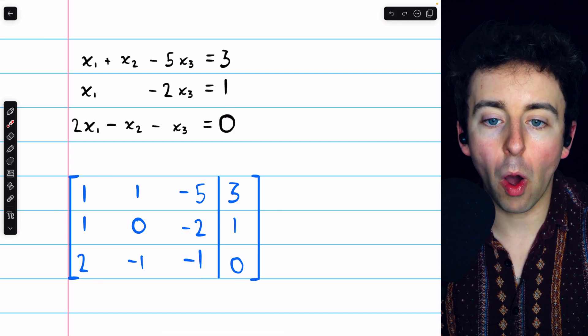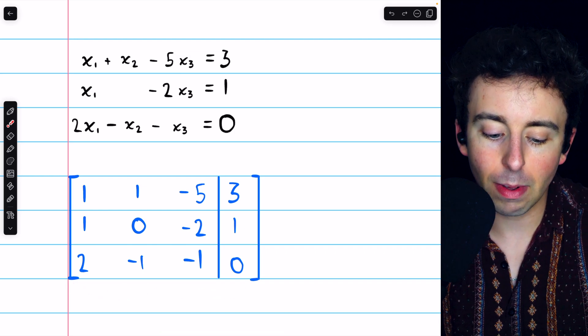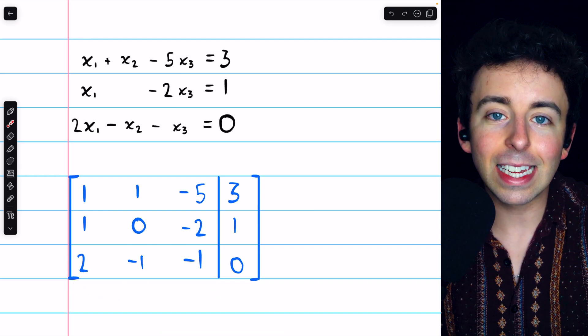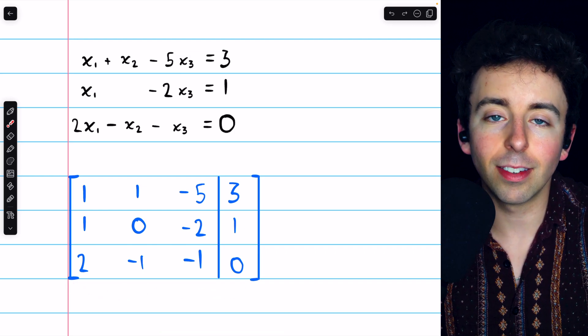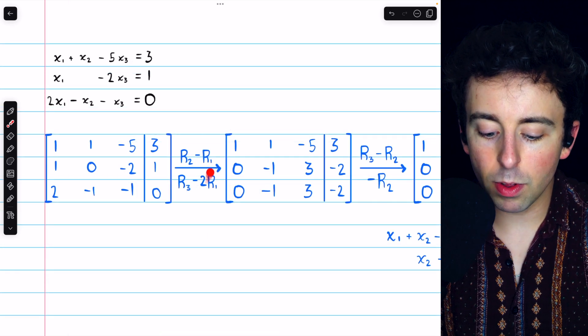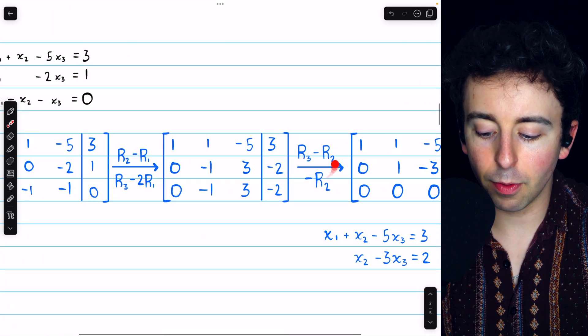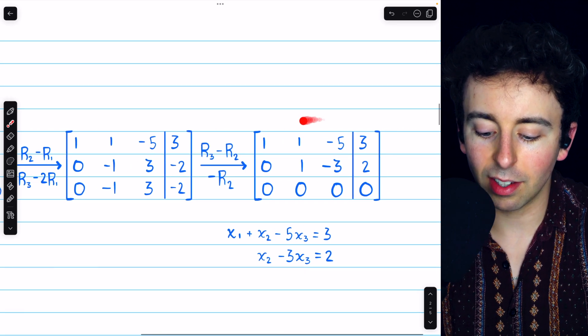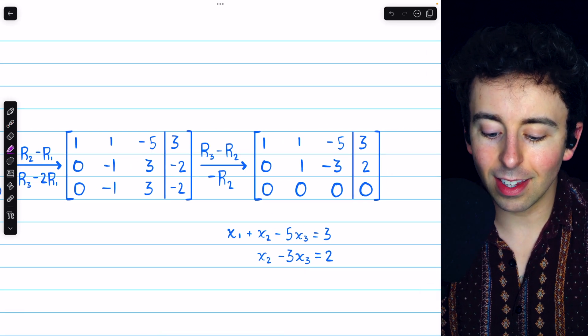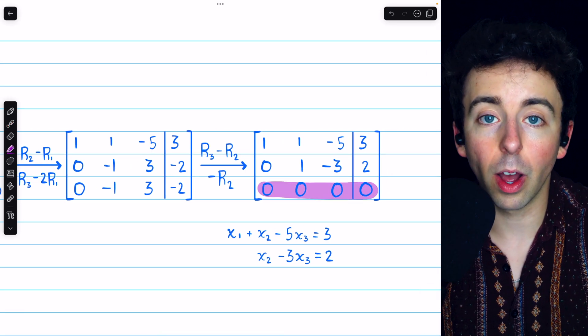And then just as before, we can perform elementary row operations on this augmented matrix so that the leading entry in each non-zero row is positive 1. But going through that same process as before, we end up with this matrix. You can see that in this case, we do have a row of zeros.